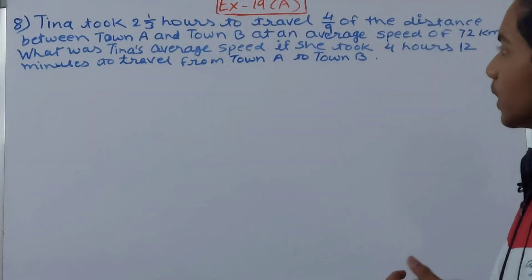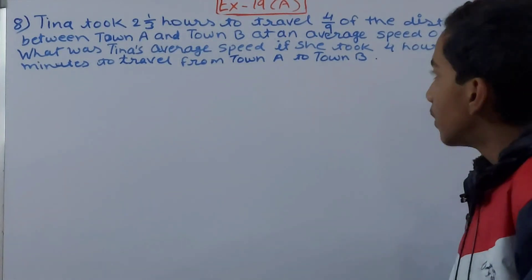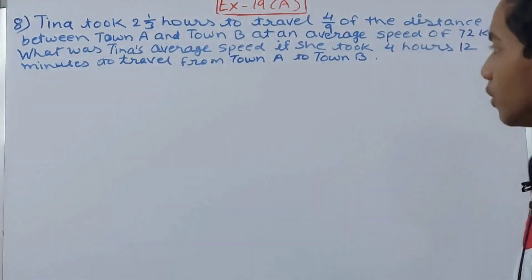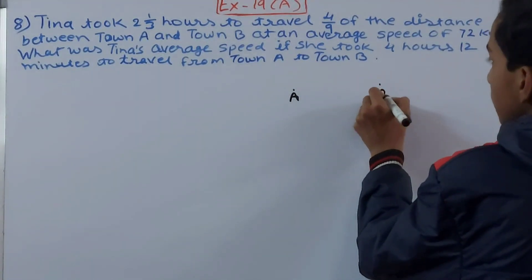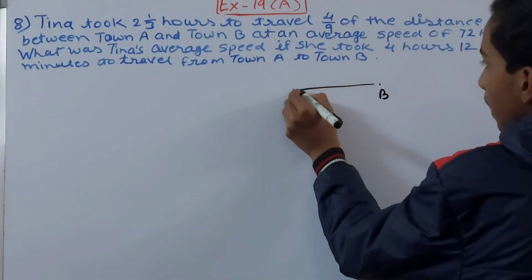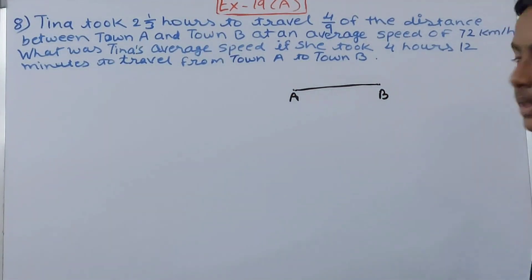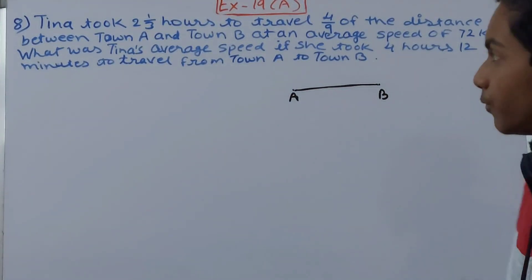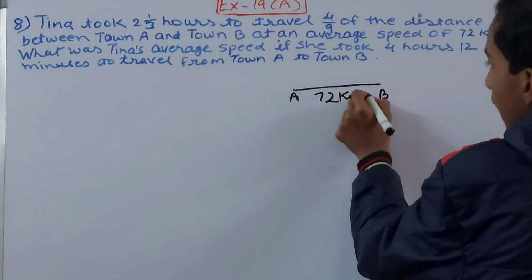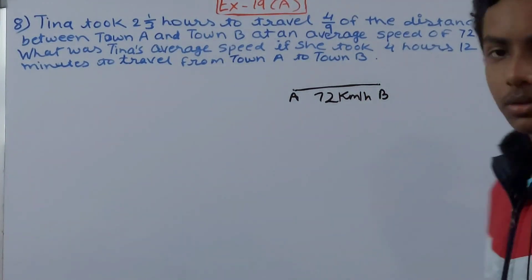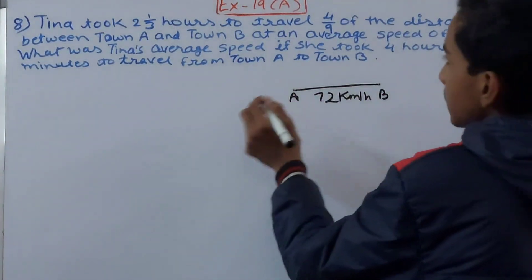Then it asks: what was Tina's average speed if she took 4 hours 12 minutes to travel from Town A to Town B? So basically there are two towns — let's say this is Town A and this one is Town B. Tina goes from Town A all the way to Town B. Her speed given is 72 kilometers per hour.